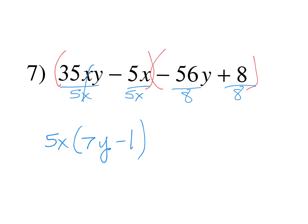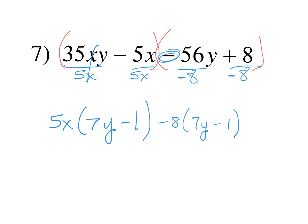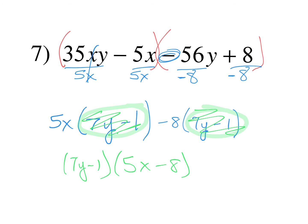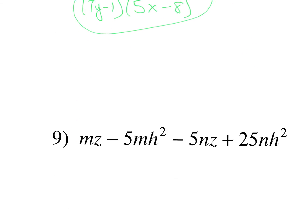That's why I told you: if something leads with a negative, take it out. The third term in our second parentheses is negative 56, so you need to factor out a negative. When you do negative 8: negative 56 divided by negative 8 is positive 7y, and positive 8 divided by negative 8 is negative 1. Now the two parentheses are exactly the same — 7y minus 1. Factor out that new GCF, write it one time, and the leftovers 5x minus 8 get their own parentheses.